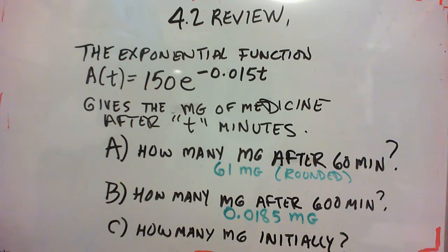Okay for part A we plug in 60 for t and you should get 60.985, and I rounded this to 61 milligrams. In part B, 600 minutes which is 10 hours, 0.0185 milligrams. So the medicine is almost gone after 10 hours.